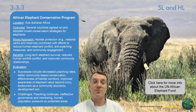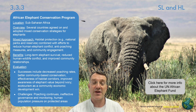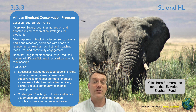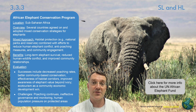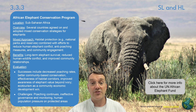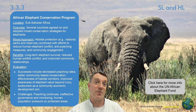The African Elephant Conservation Program across sub-Saharan Africa combines habitat protection through national parks with efforts to reduce human-elephant conflict, anti-poaching measures, and community engagement. Benefits include long-term elephant survival and improved community relationships. Successes include decreased poaching rates and the effectiveness of habitat corridors. Challenges include ongoing ivory poaching, ineffective governance and monitoring, and human population pressure on protected sites.